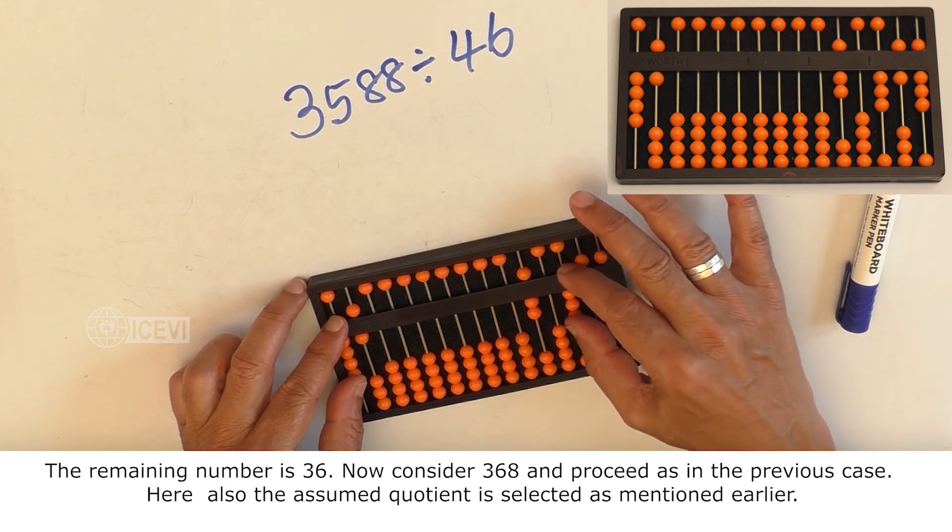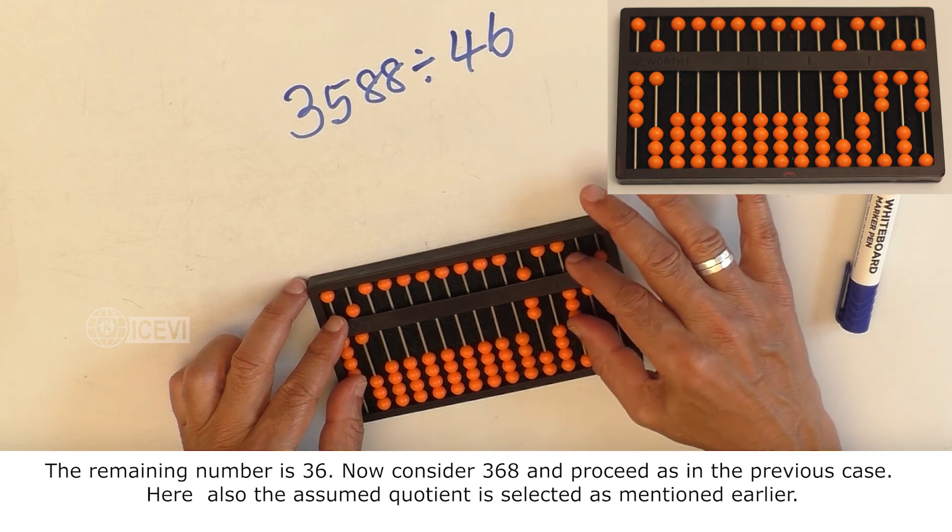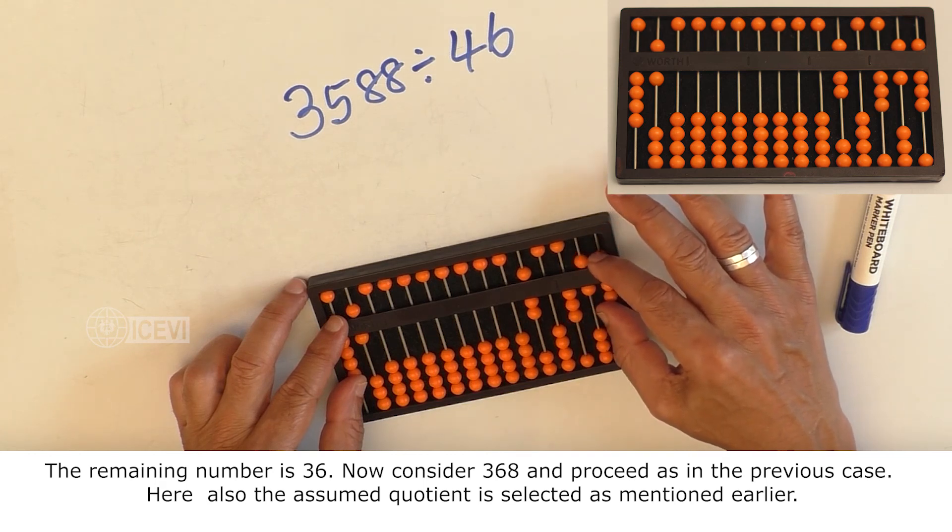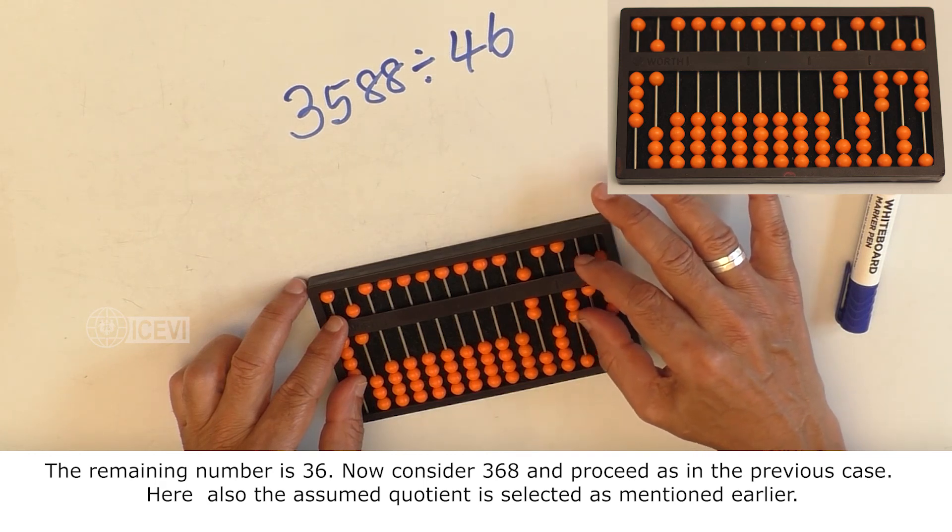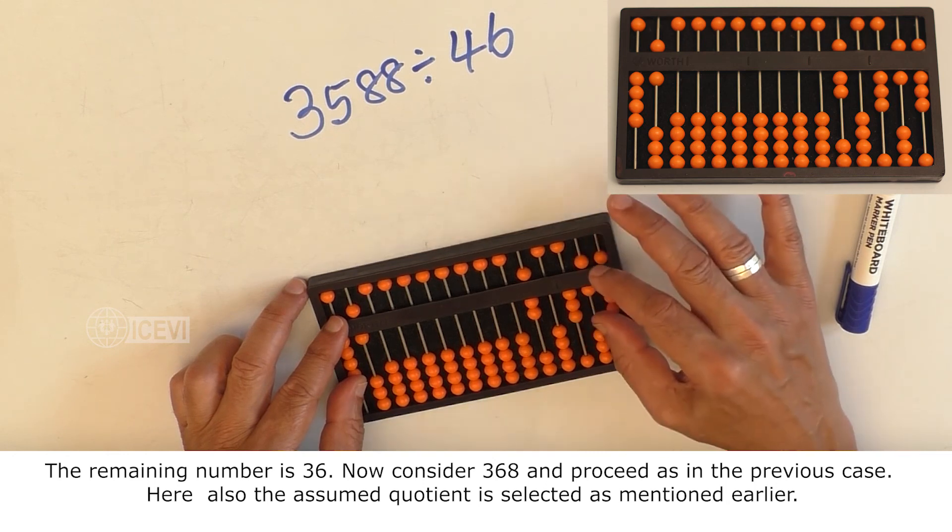Now consider 368 and proceed as in the previous case. Here also, the assumed quotient is selected as mentioned earlier.